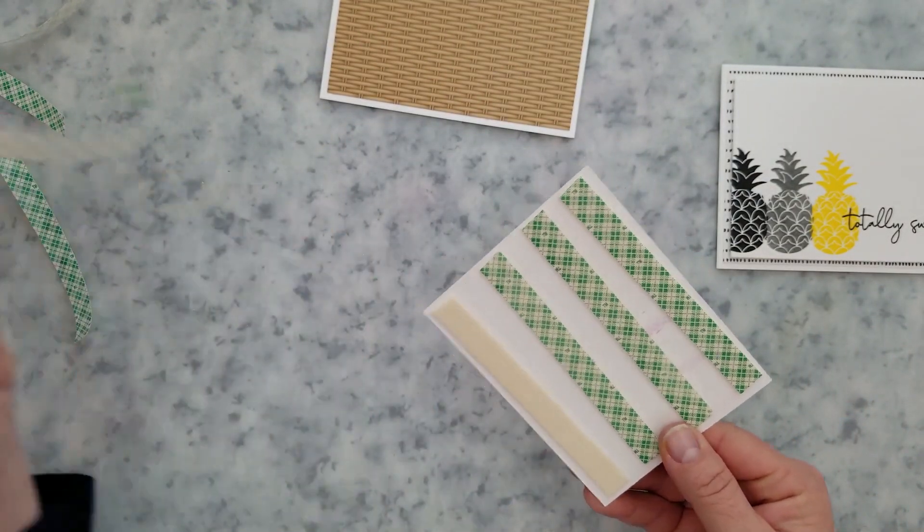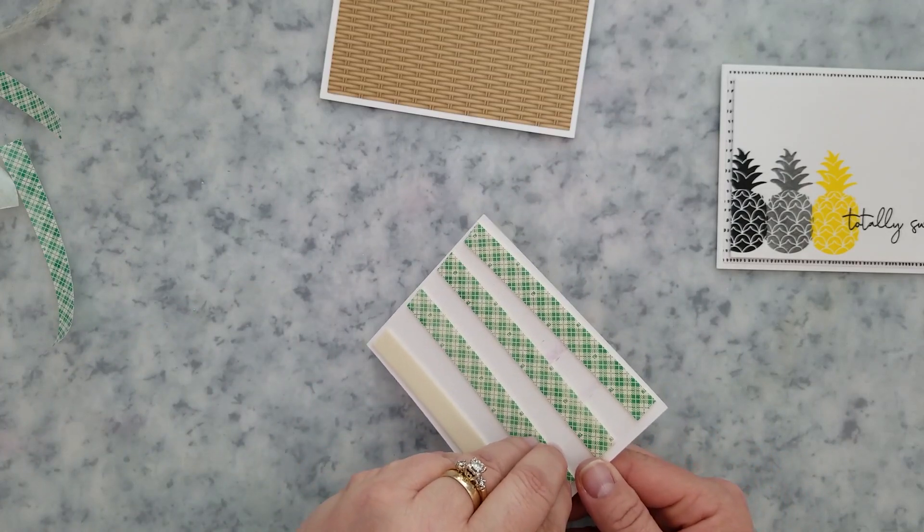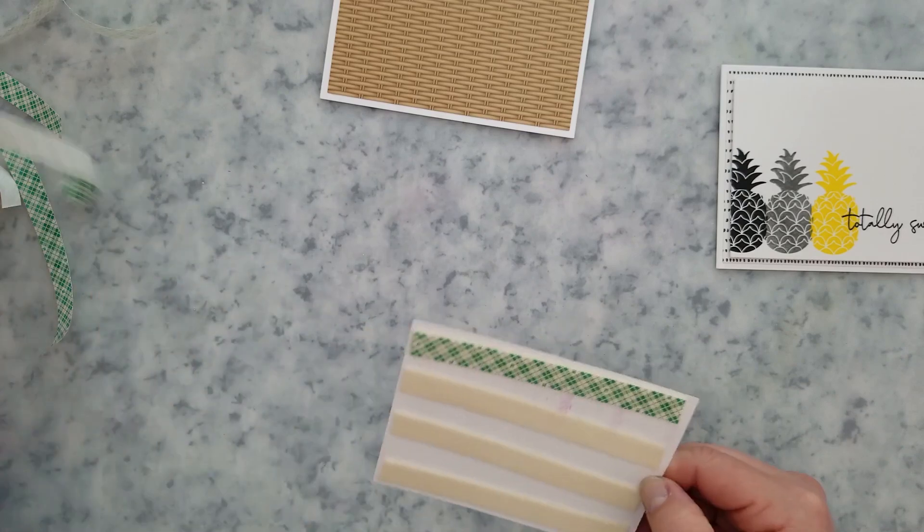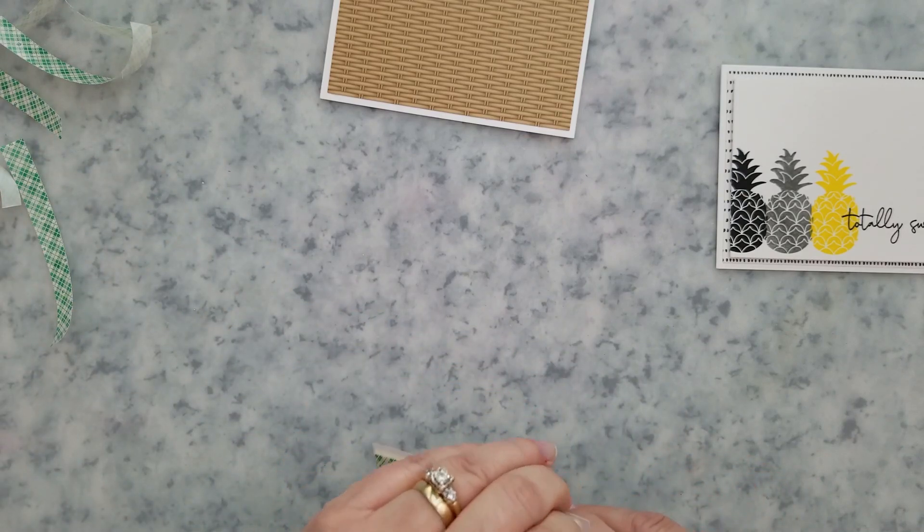Now for the other cards, all I did was add the tape from my tape gun to the back of the panels and just added them directly to the card base.